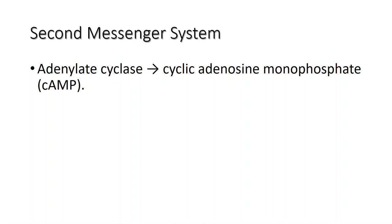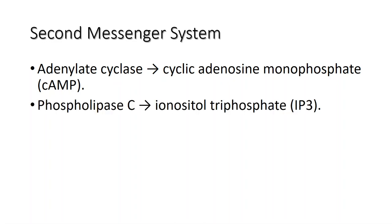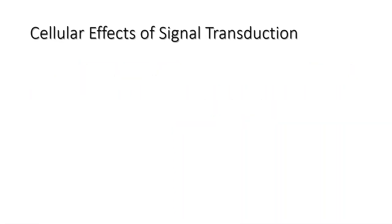Different receptors use different second messengers. Two common examples of second messengers are cyclic adenosine monophosphate (cyclic AMP) and inositol triphosphate (IP3). The enzyme adenylate cyclase is an example of an effector protein that makes cyclic AMP, while phospholipase C is the enzyme that makes IP3. Second messengers, after they are produced by the effector protein, cause metabolic changes within the cell.